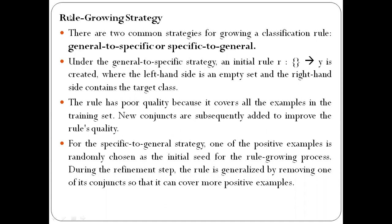There are two strategies we can use to grow or increase the rules in a rule-based classifier. The first is the general-to-specific method or strategy, and the second is specific-to-general. Using these two methods we can include and grow the rules required for a rule-based classifier. In the general-to-specific strategy, we start with an empty rule, also called a default rule.